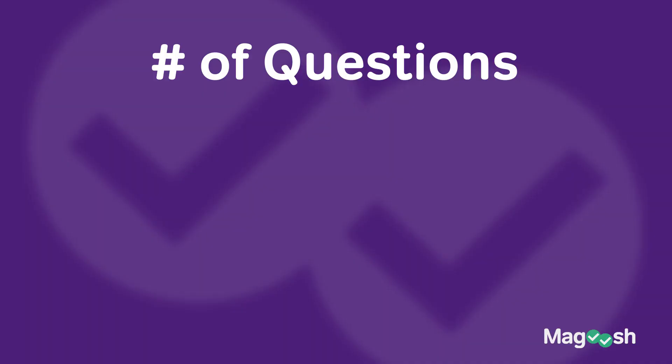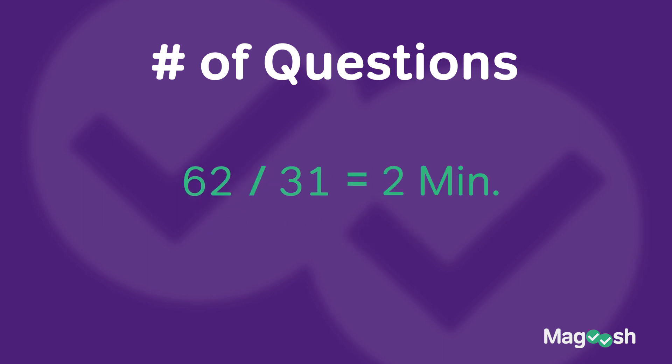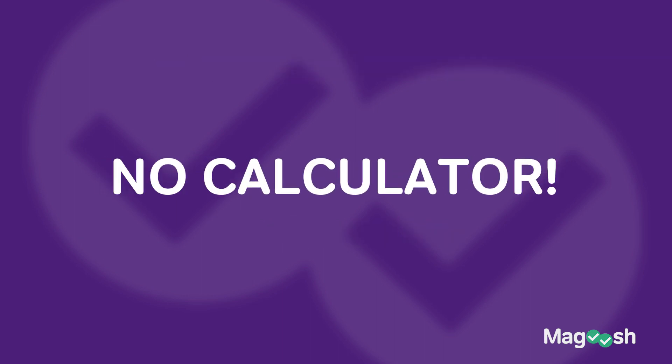That was the how and the what, but don't go just yet. I have other important information about the GMAT math section, starting with the number of questions. You will have 31 questions and you'll have to answer them in 62 minutes, which means exactly two minutes per question. Next, there is no calculator, so you really have to fine-tune those mental math muscles. But you will get scratch paper.